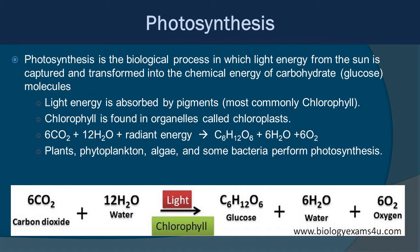Photosynthesis is a biological process in which light energy from the sun is captured and transformed into chemical energy of carbohydrates — glucose essentially. Light energy is absorbed by pigments, most commonly chlorophyll. Chlorophyll is found in organelles called chloroplasts. So when you hear those terms, that's what they mean.